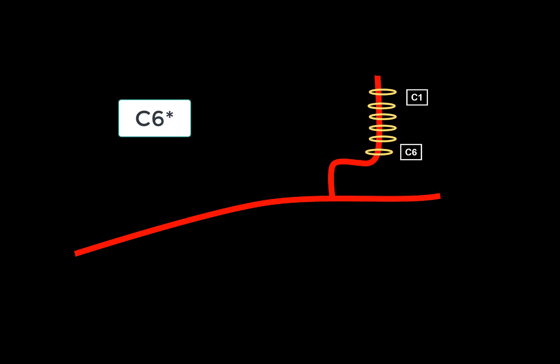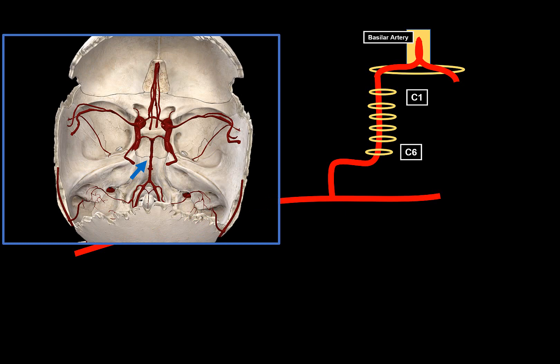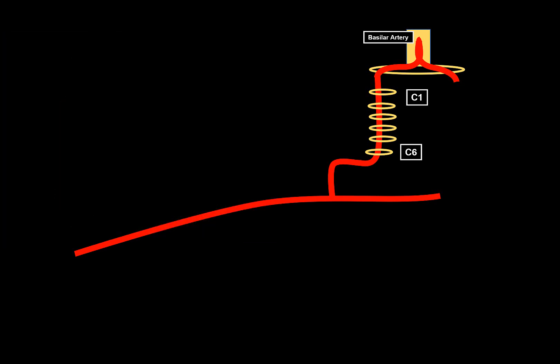Starting with the vertebral artery: it ascends along the neck inside the transverse foramina of C1 through C7 cervical vertebrae. Then as it exits the transverse foramen of C1, it pierces through the foramen magnum into the posterior cranial fossa. It then joins with the vertebral artery of the opposite side, forming the basilar artery, which lies on the clivus behind the fossa tosica, helping to form the circle of Willis through the posterior cerebral arteries. This artery has three parts: the pre-vertebral part, the transverse part, and the intracranial part.